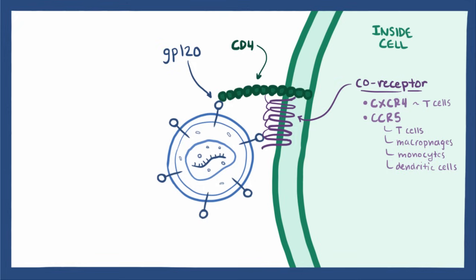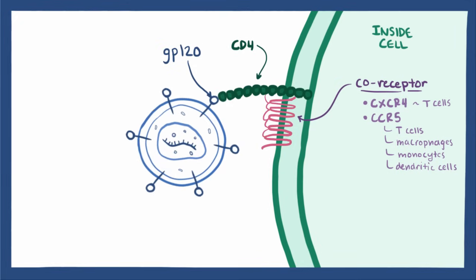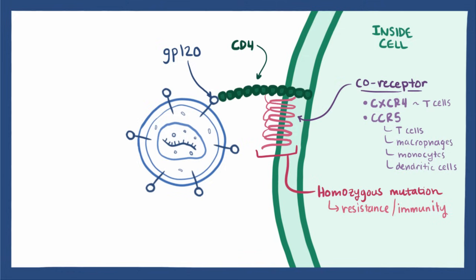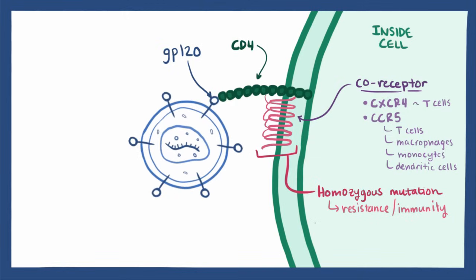These coreceptors are so important for HIV that some people with homozygous genetic mutations in their CCR5 actually have resistance or immunity to HIV, since HIV can't attach to them and get into the cell. Even heterozygous mutations, which lead to fewer coreceptors on the cells, can make it harder for the virus to spread and result in a slower disease progression.